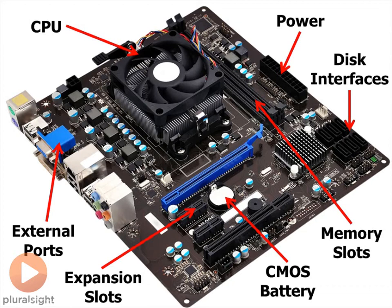Another item we have here are the memory slots. They're partially hidden there by the processor fan, but those long, skinny black slots with little clips on the end — that's where your RAM, your random access memory, will go. And it's becoming a common theme: there's a whole separate lesson just on RAM.